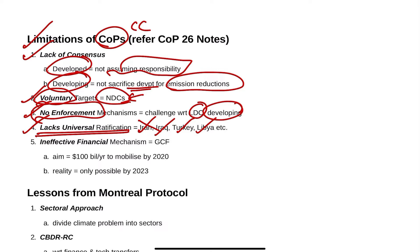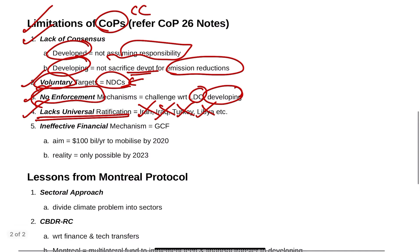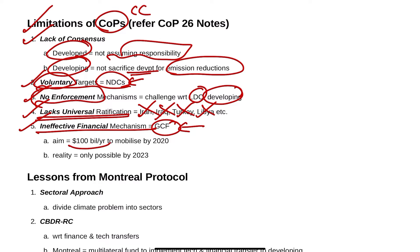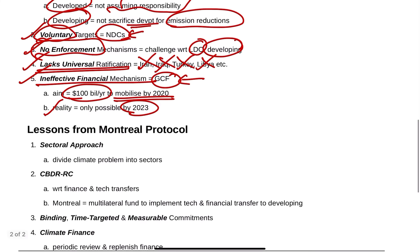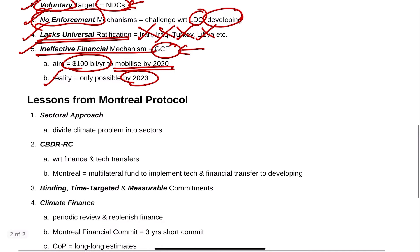There is also a lack of universal ratification — for example, Iran, Iraq, Turkey, and Libya have not signed the Paris Agreement. The financial mechanism is ineffective; for example, the Global Climate Fund had an aim of $100 billion per year to be mobilized by 2020, but in reality it will only be possible by 2023.